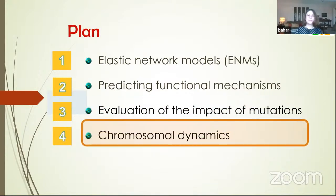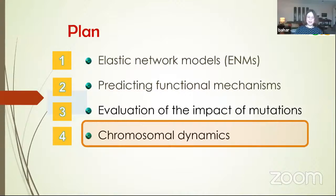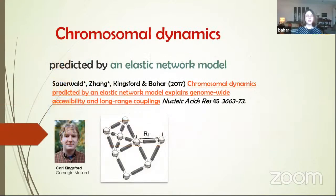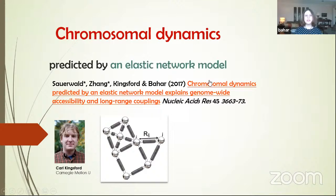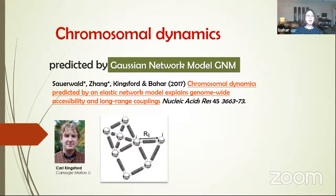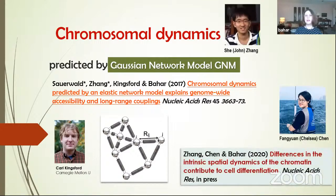I'm moving to the last part: chromosomal dynamics — another topic that is extremely exciting to us. I keep learning from my collaborator Karch at Carnegie Mellon, who is a genomics researcher. In the first study, almost a proof of concept, the question was: can we use elastic network models to explain genome-scale accessibility and some long-range coupling? We used the simplest elastic network model, the Gaussian network model, and we have another paper that appeared this year. We started to focus on the differences between different cell types and how those differences would affect their function.